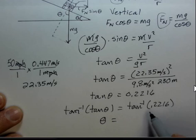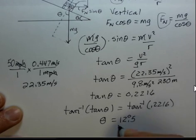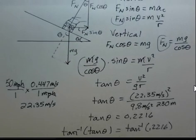Here, inverse tangent and tangent functions cancel, just leave us theta. On your calculator, if you're in degree mode and you do this operation, inverse tangent of 0.2216, you come up with 12.5 degrees.